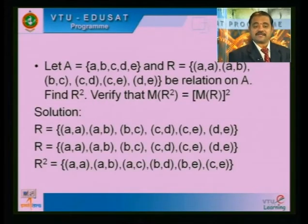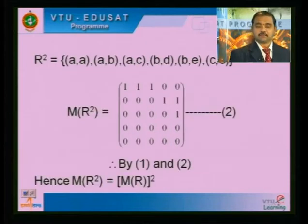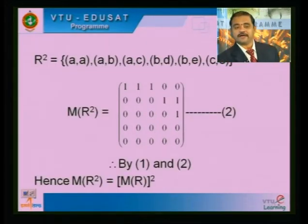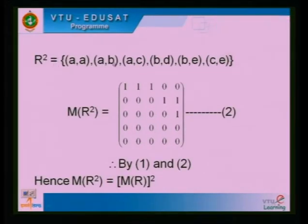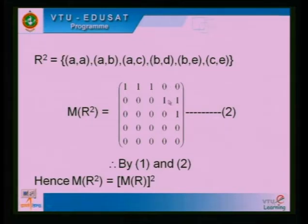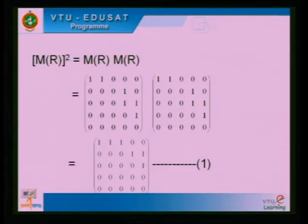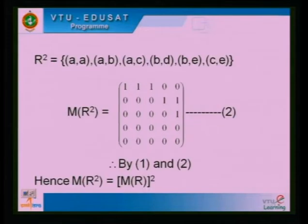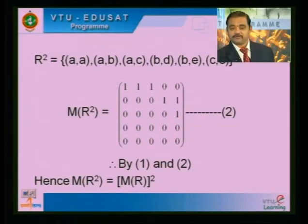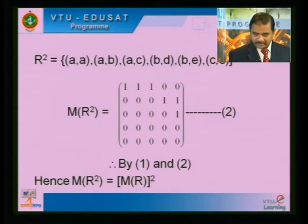From the previous computation, we know R square = {(A,A), (A,B), (A,C), (B,D), (B,E), (C,E)}. For that, the matrix M(R square) has rows: [1,1,1,0,0] for A, [0,0,0,1,1] for B, [0,0,0,0,1] for C, and zeros for D and E. By equations 1 and 2, M(R square) equals M(R) whole square — this is the verified relation.